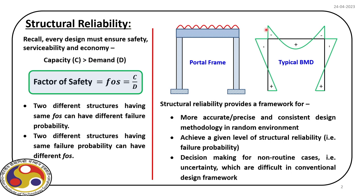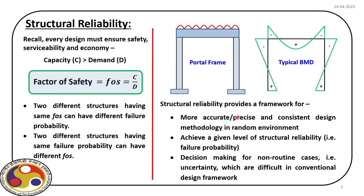This uncertainty comes from practical sources. For example, for an RC structure, we take concrete samples, test them, fit a distribution, and then model its impact on the structural response and design output. To achieve this goal, we address failure probability, knowing that one minus failure probability gives the reliability of the structure. For non-routine cases where the conventional deterministic framework faces difficulty — for example, under seismic loading which is random in nature — the deterministic framework is not always sufficient, and that is the reason we move towards a structural reliability-based approach.